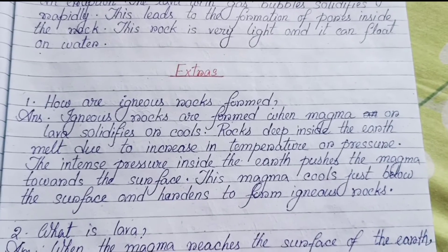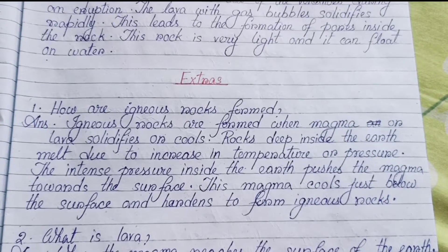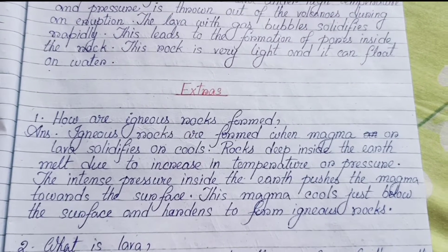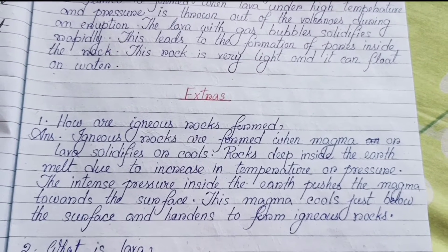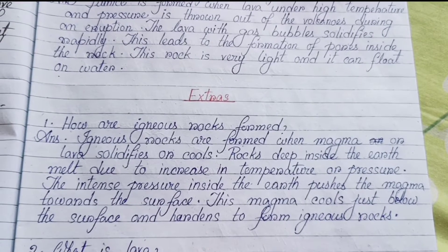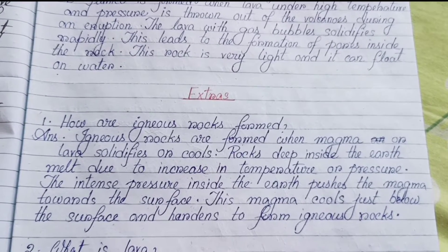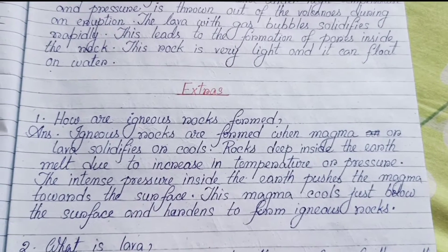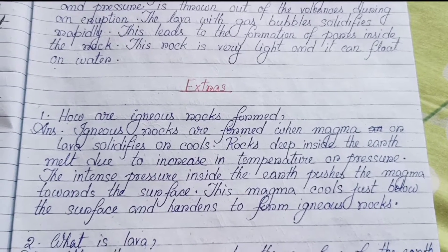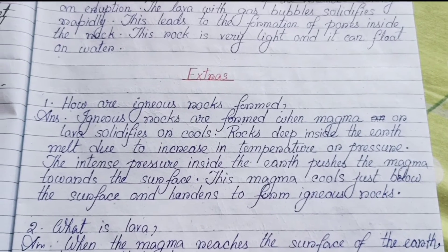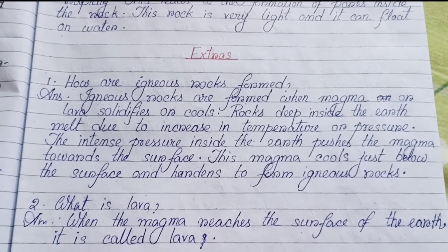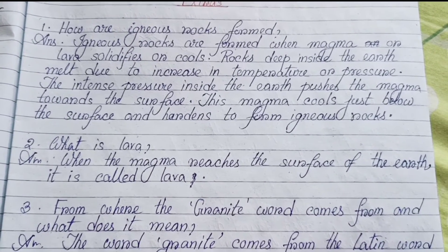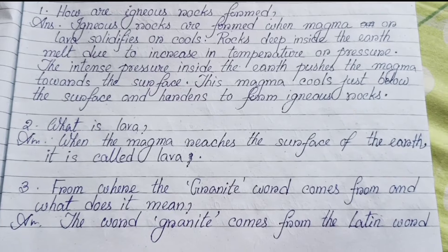Inside question answers. Number one: How are igneous rocks formed? Igneous rocks are formed when magma or lava solidifies or cools. Rocks deep inside the earth melt due to increase in temperature or pressure. The intense pressure pushes the magma towards the surface. This magma goes just below the surface and hardens to form igneous rocks. Number two: What is lava? When magma reaches the surface of the earth, it is called lava.